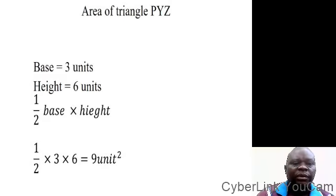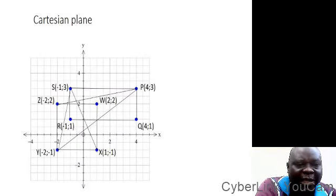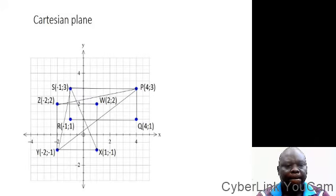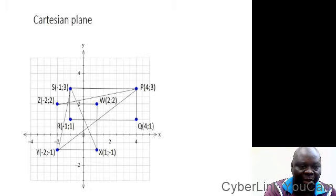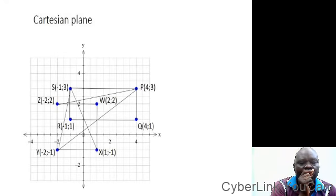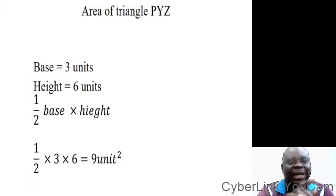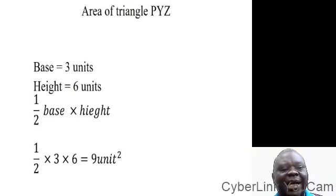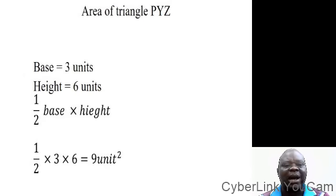While the height is 4 units. Going by this, we have one-half times base 3 times height 4, which gives you 6 unit squares. Now let's look at the other triangle, triangle PYZ. Check the base — we have 3 units. Then look at the height: from minus 2 up to plus 4, when you count the units we have 6 units. Then going by our formula, half times base 3 times height 6 gives us 9 unit squares.